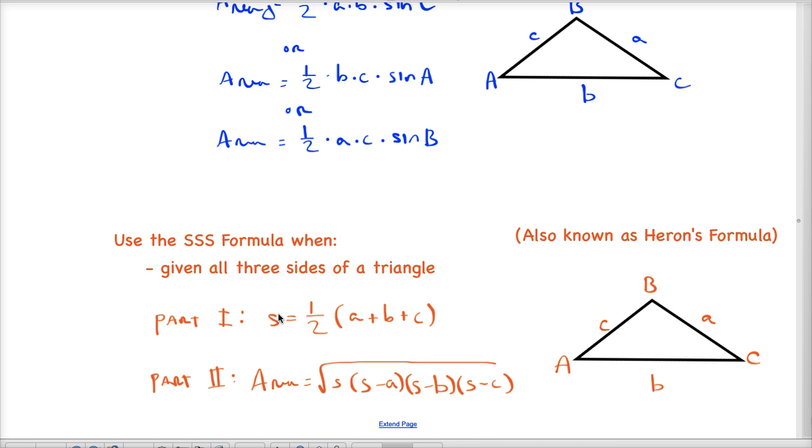So in this case I have sides a, b, and c given to me, so this formula has two parts. The first part is we come up with this expression for s, which is one-half the sum of the side lengths a plus b plus c. So the first thing we're going to do is find this value for s.